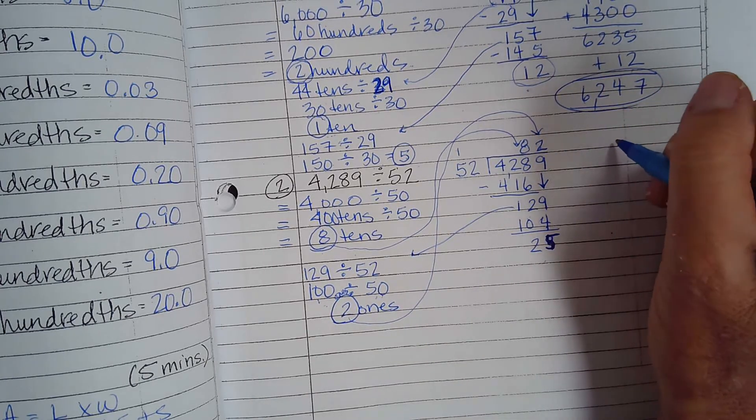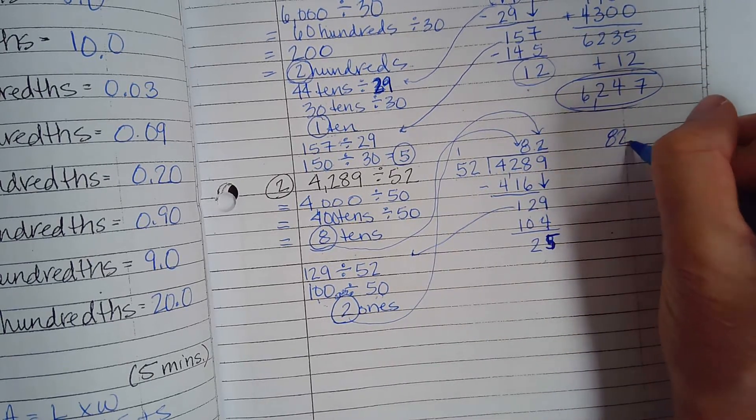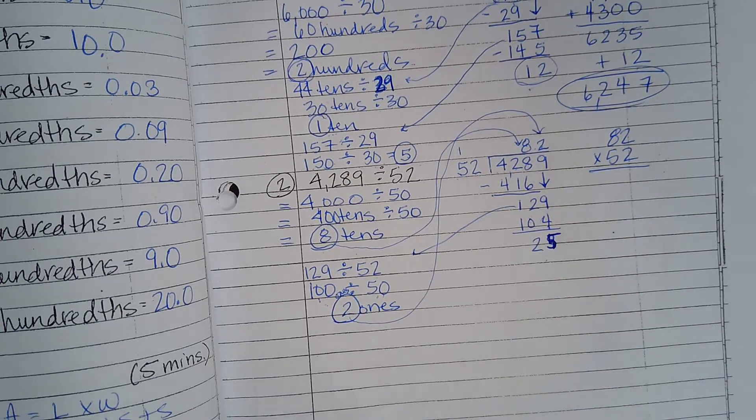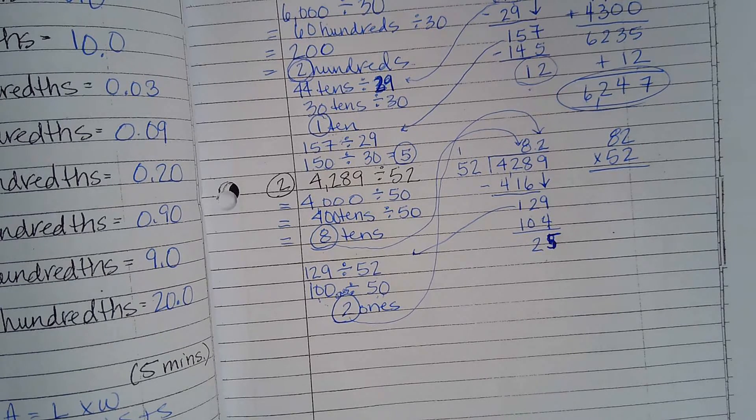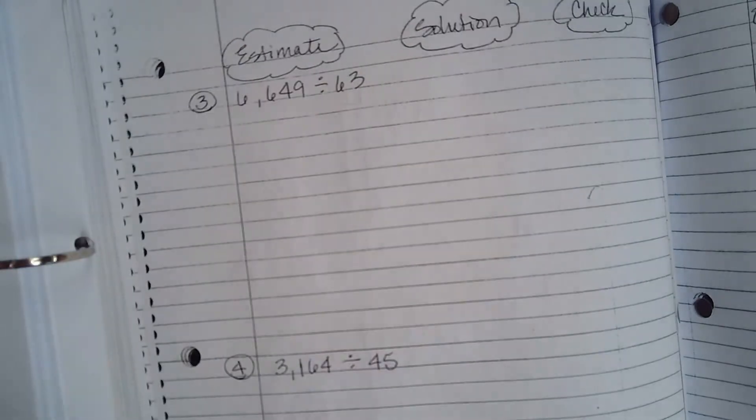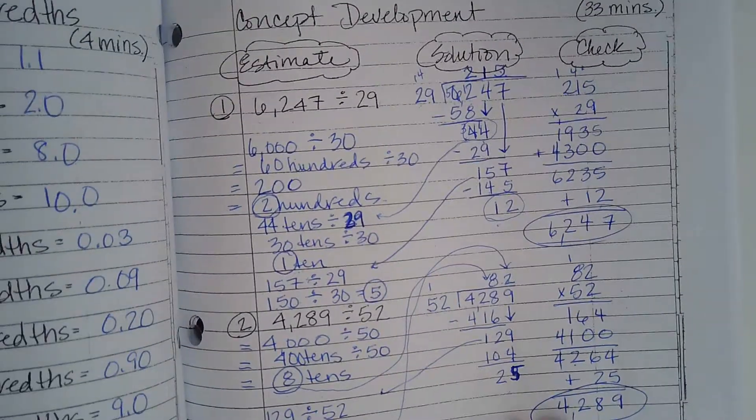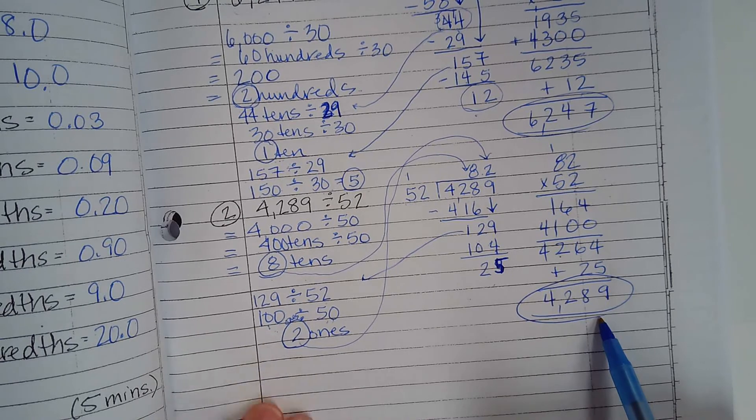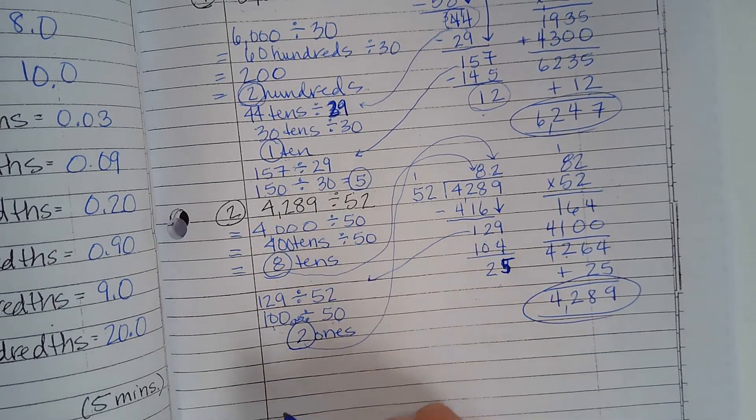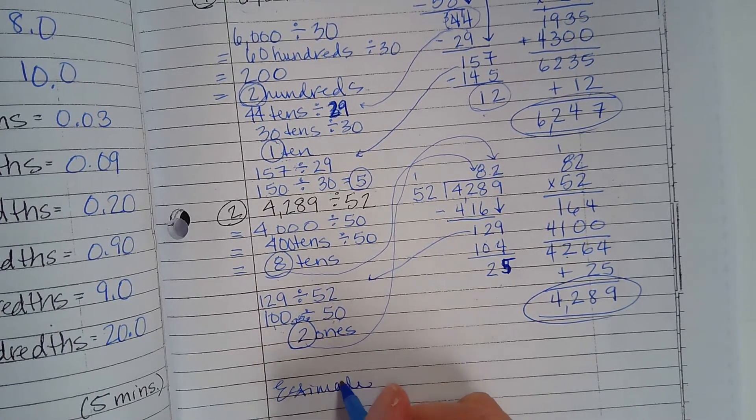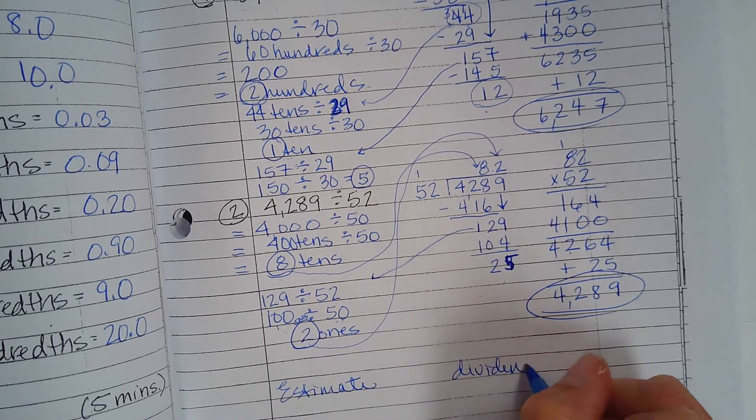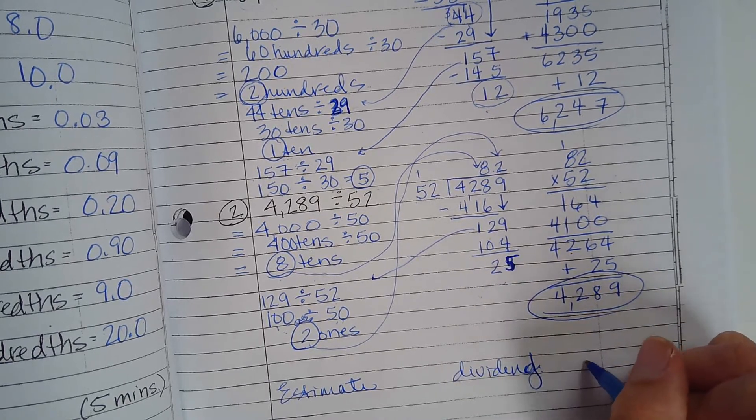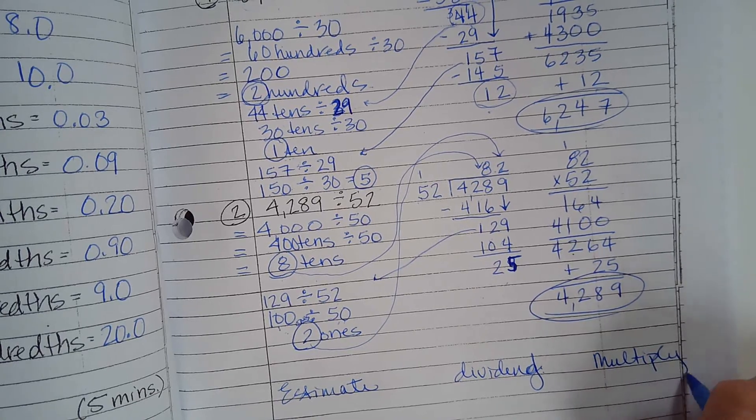Now let's check: 82 times 52. By doing this, you're building your abilities. You're building your muscles on multiplication and division. That's why we're repeating this. We ended with 82 remainder 25. We multiplied, then added our remainder and got 4,289. The entire reason we are estimating is to build our stamina at estimating, dividing, and multiplying. We're trying to get better, stronger, faster at these skills.